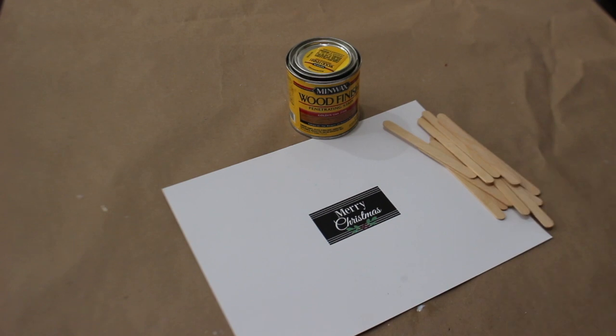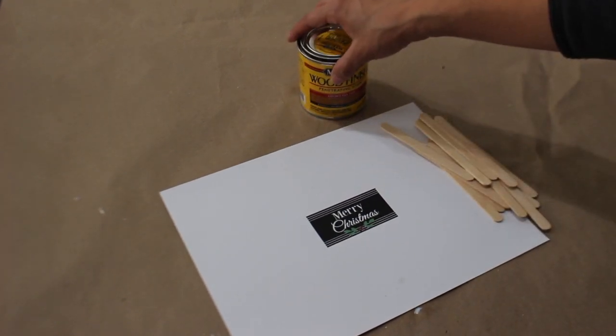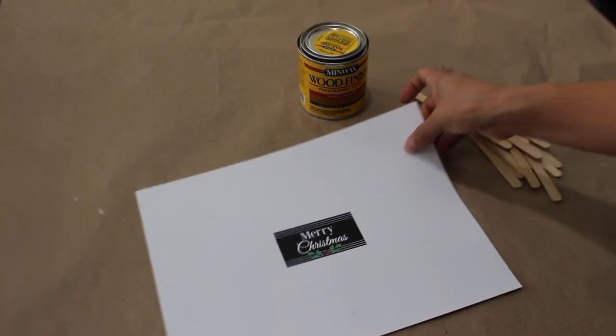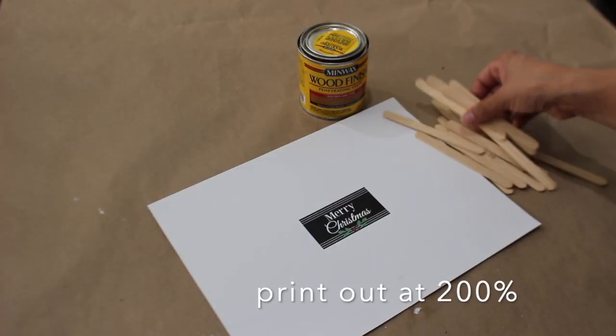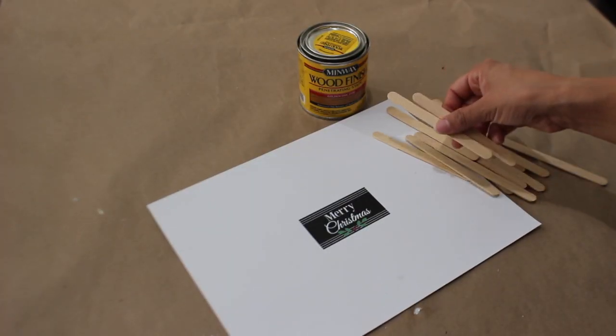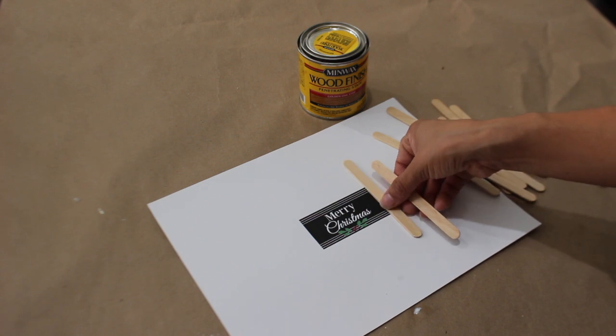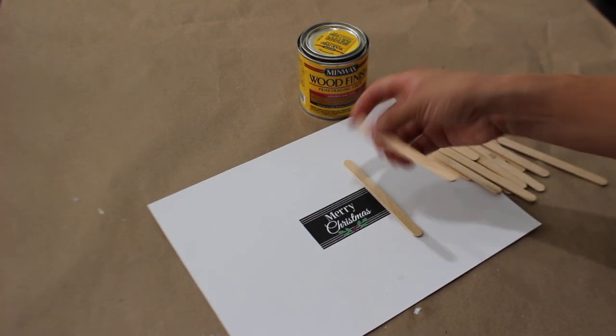For the fourth ornament, I have this other printout that I created. This will also be linked below. I have some popsicle sticks that you can get from Dollar Tree. I'm going to create a little farmhouse frame around this to make it look like a little farmhouse sign ornament.